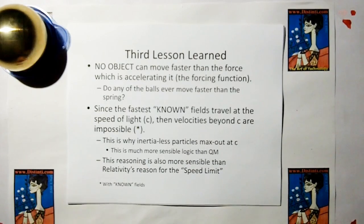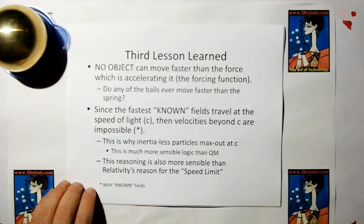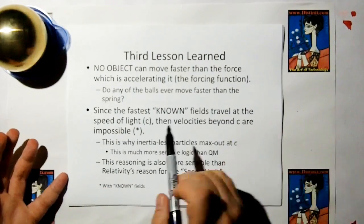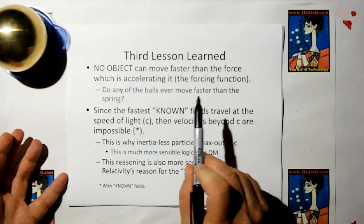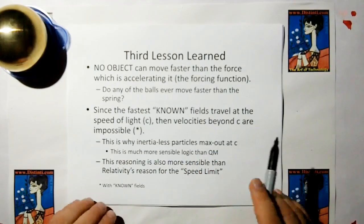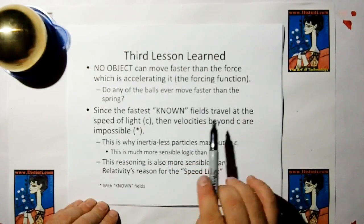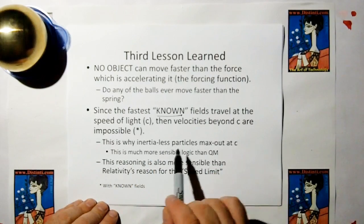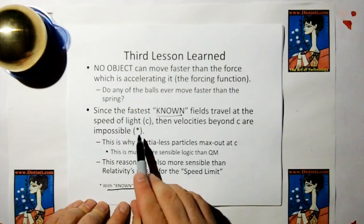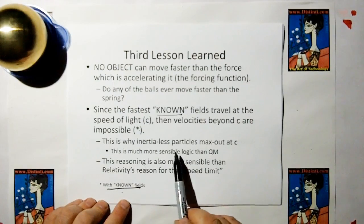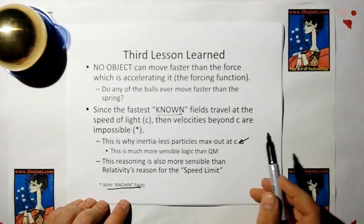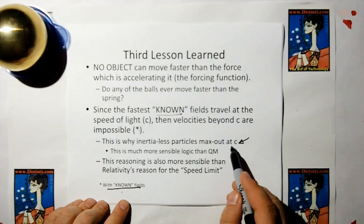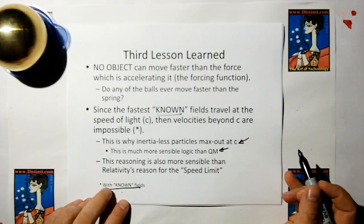The third lesson learned: no object can move faster than the force which is accelerating it — the forcing function. Do any of the cannonballs ever move faster than the spring? No, absolutely not. Since the fastest known fields travel at the speed of light, velocities beyond C should be impossible with known fields. This is why inertialist particles max out at C according to present theory. This is a much more sensible logic than the quantum mechanics derivation shown at the beginning.